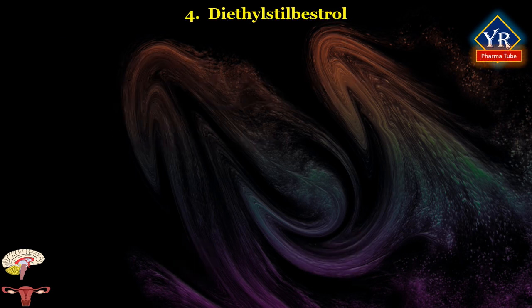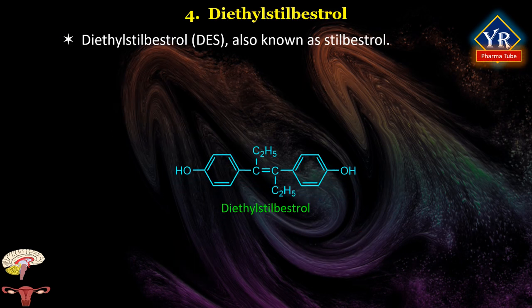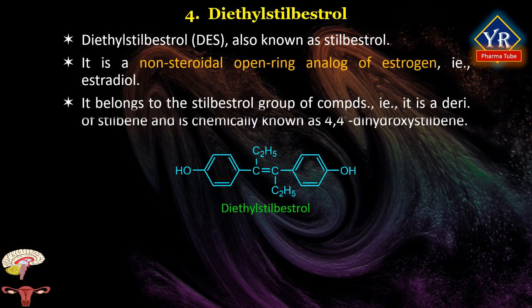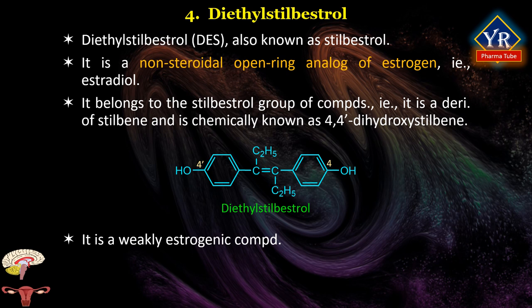Diethylstilbestrol (DES), also known as stilbestrol, is a non-steroidal open-ring analog of steroidal estrogen, that is, estradiol. It is an agonist of the estrogen receptors — the biological target of estrogens like estradiol. It belongs to the stilbestrol group of compounds, being a derivative of stilbene, and is chemically known as 4,4'-dihydroxystilbene. It is a weakly estrogenic compound.